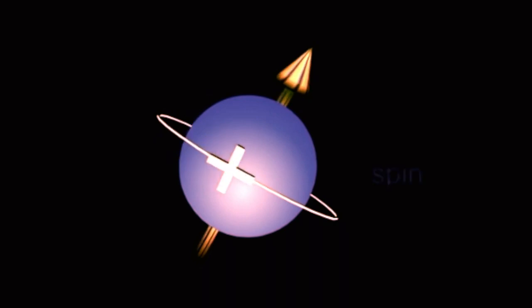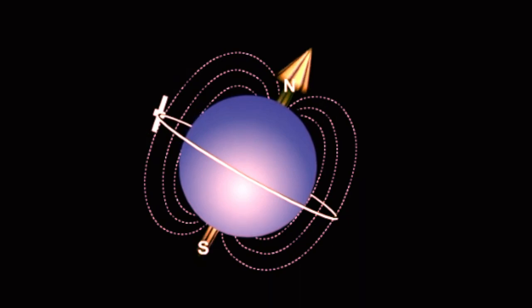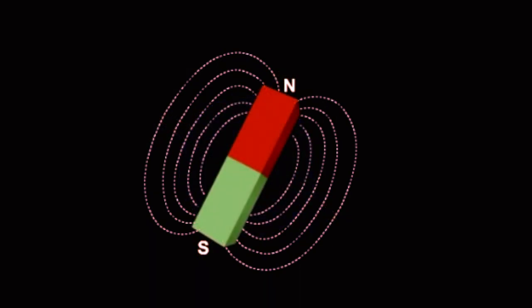The hydrogen nucleus contains one positively charged proton that spins. Therefore, the hydrogen nucleus has a magnetic field induced around it and it acts as a small magnet with a north and south pole of equal strength.